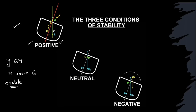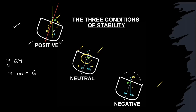If the G-to-M distance is zero, the boat will remain as it is — it is neutral stability, and a tiny disturbance decides the fate. If the metacenter is below the center of mass, the buoyant force keeps rotating the boat further and it will sink. This is why these three cases are called positive, neutral, and negative stability.